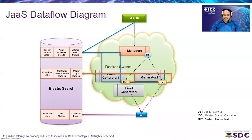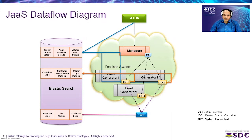If the load from the initial containers isn't sufficient, users have the option to dynamically scale up or down the number of virtual users to increase or decrease load on the system under test. For example, increasing from two to three containers: the new container gets data from the database, starts the workload, and begins sending data back. This cycling process allows continuous adjustment of load levels.